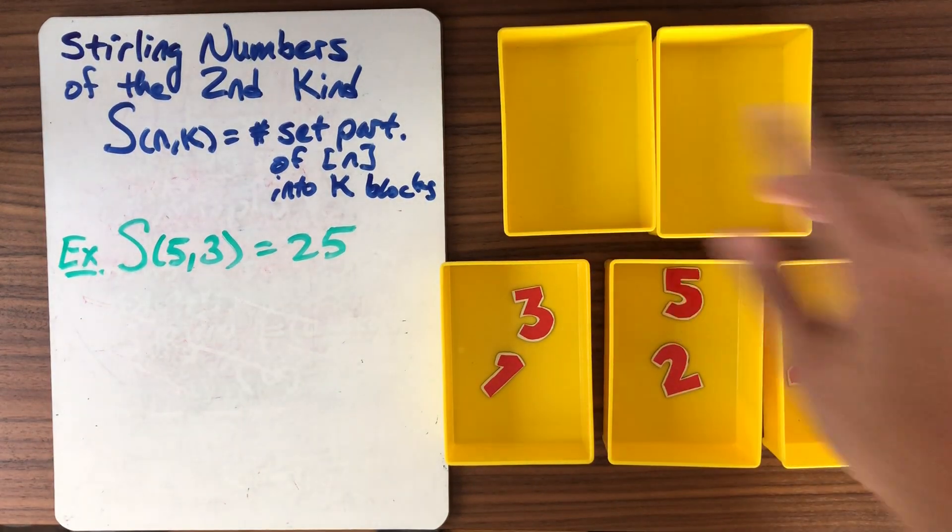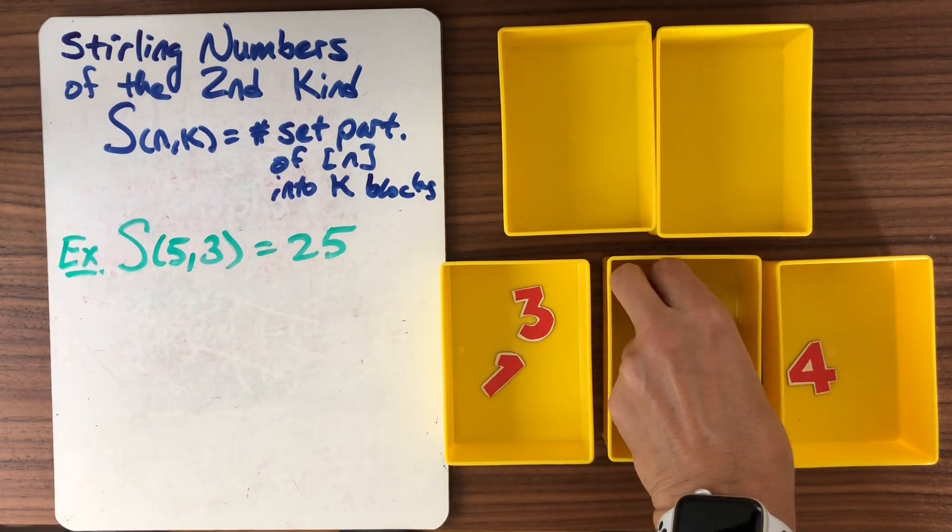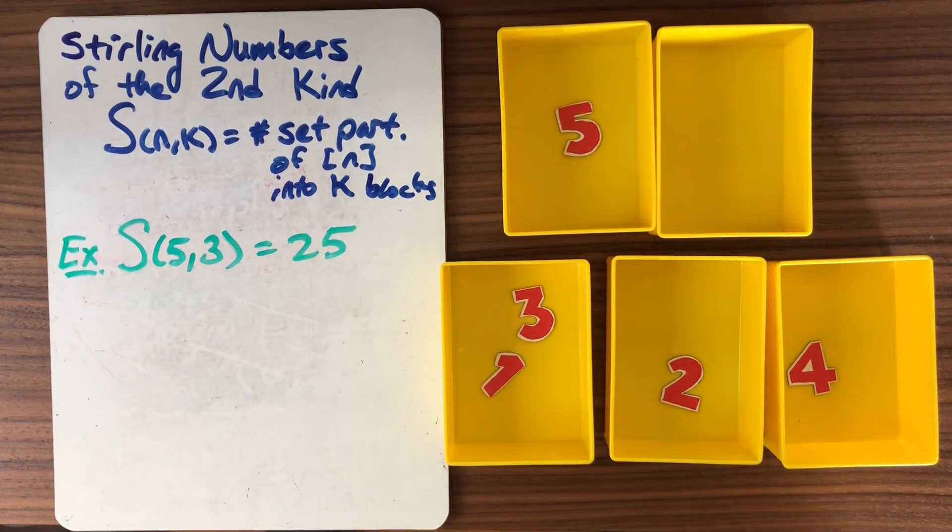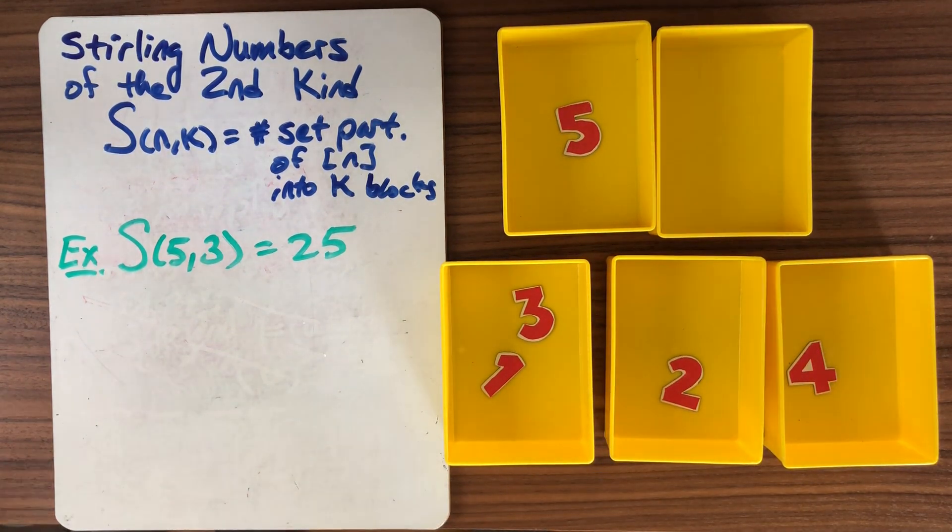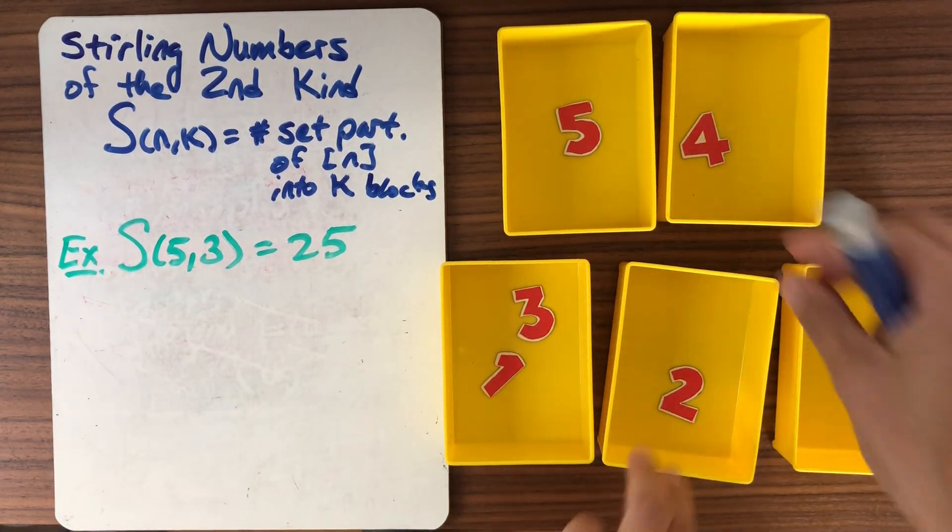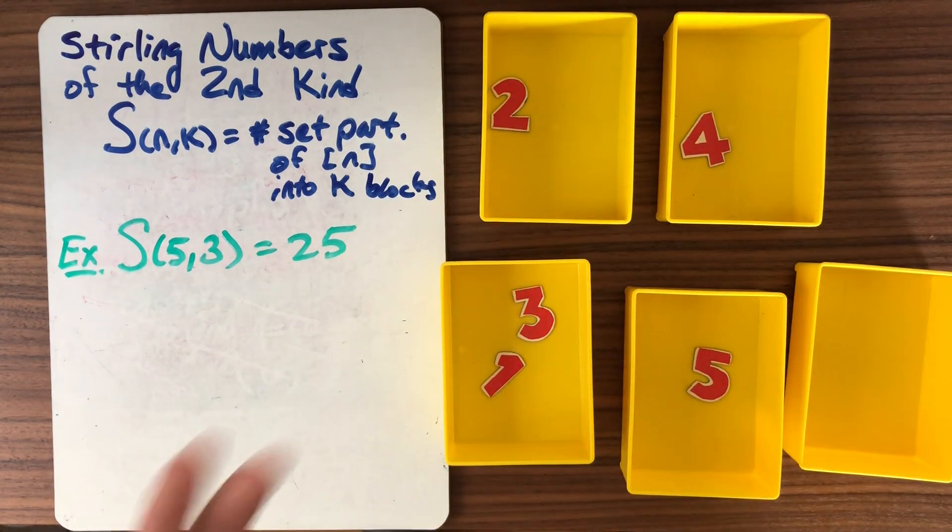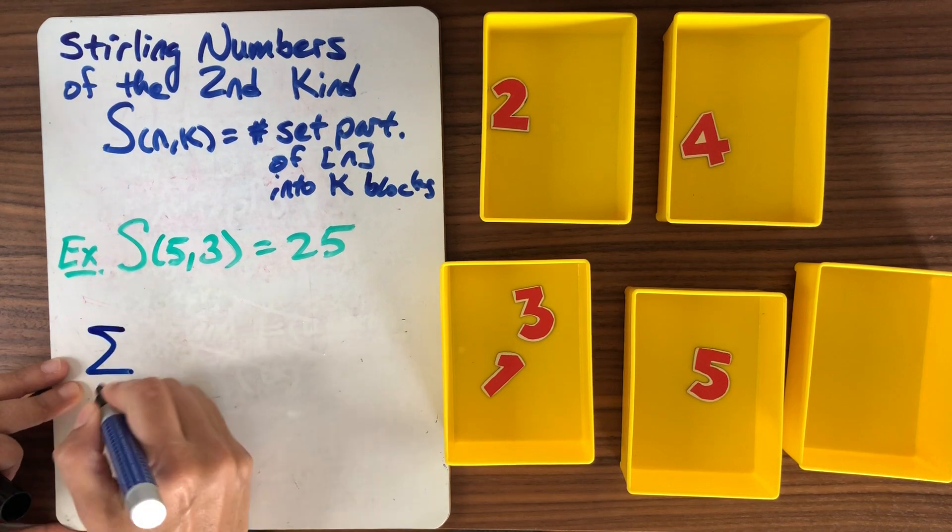But another interesting thing that we can ask ourselves is, what happens if we add these all up? So that's a perfectly legitimate question. We say, okay, now I'm allowed to have empty blocks. So that's what it comes down to if I want to add these up. If I say I don't mind about the number of blocks, well, the most blocks I could have that would be non-empty is 5. Here, this configuration is the same as this. I don't care about where I've put the blocks, only which numbers are together.